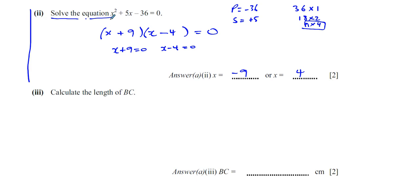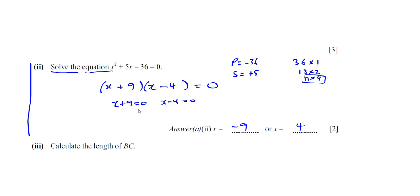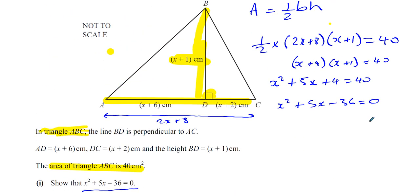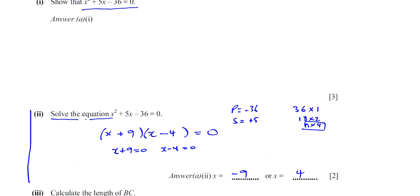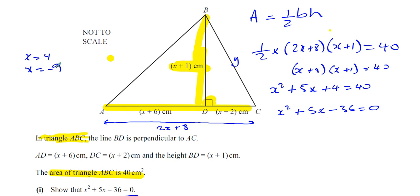However, now it says calculate the length of BC. So let's go back to the diagram. BC is this length here. You can see BC is part of this right angle triangle. Now we know that the values of x were 4 and minus 9. We can't have x equals minus 9. This is where it's time to reject the negative answer, because then the length would be negative. So you can only accept the 4. So you get 4 plus 1, which is 5, that's 5 centimeters. And 4 plus 2, which is 6 centimeters. We have a right angle triangle with the lengths 5, 6, and Y as a hypotenuse.